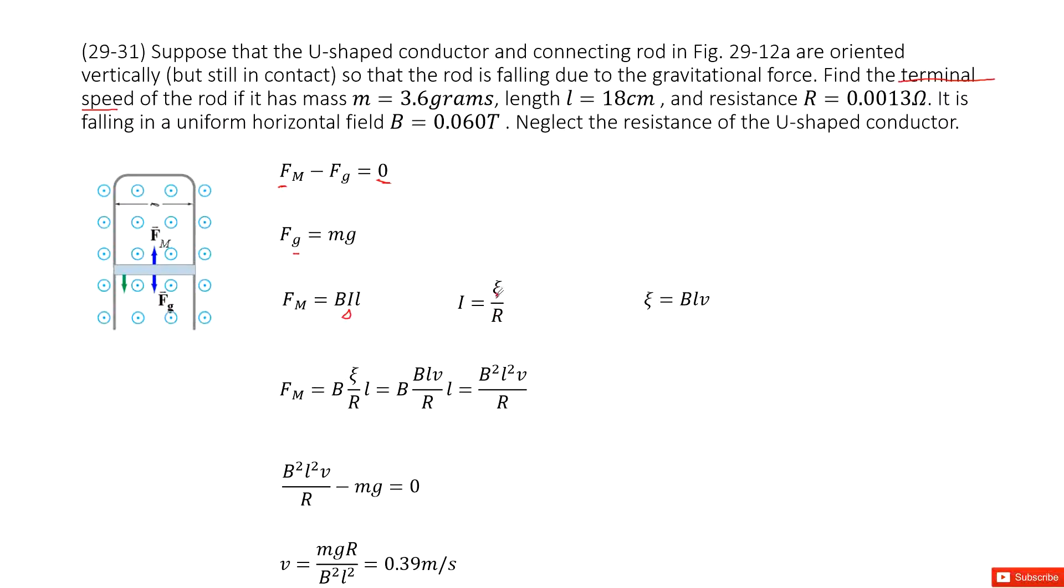Next question, how can you find the induced EMF? BLV for a bar moving in the magnetic field. Now you can see we can input the current I inside there and input the Epsilon inside. So the equation looks like this one.